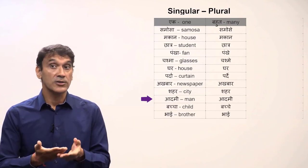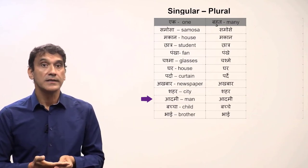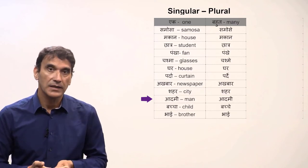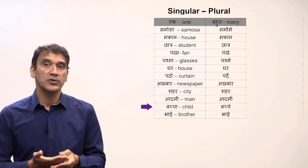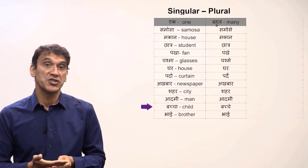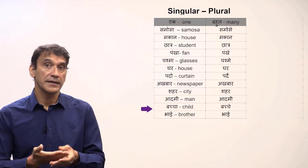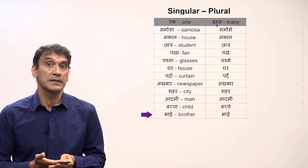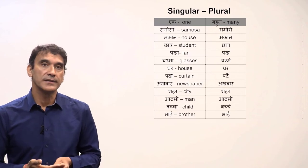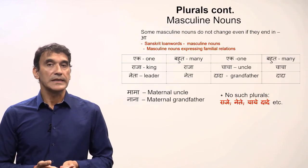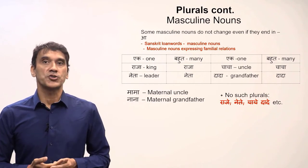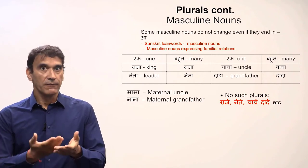'Aadmi' meaning 'a man' does not end in 'a', so it stays the same — 'aadmi' for men. 'Baccha' meaning 'child' ends in 'a', so it becomes 'bachche' for children. 'Bhai' meaning 'brother' does not end in 'a', so it stays the same — 'bhai' for brothers.